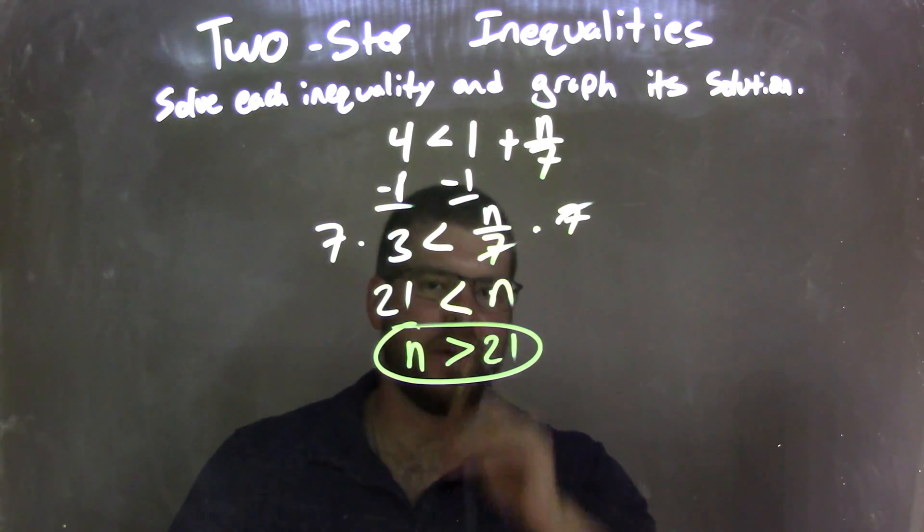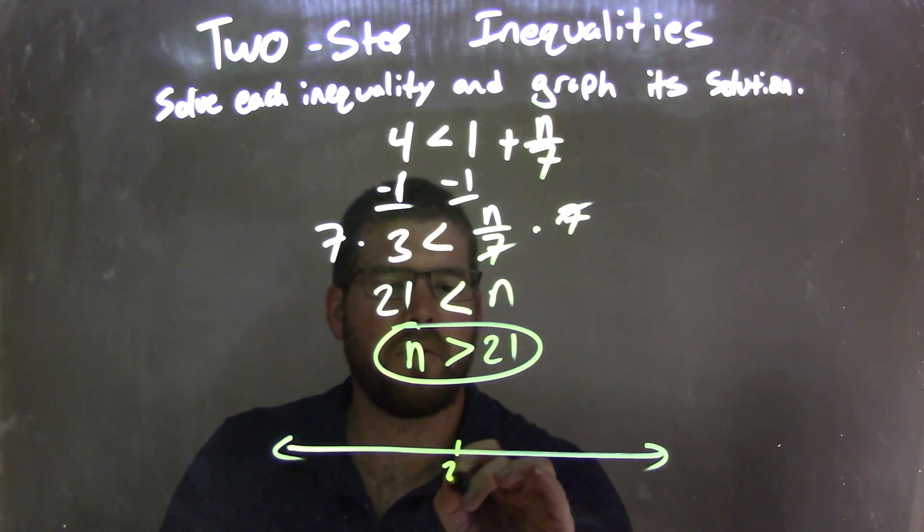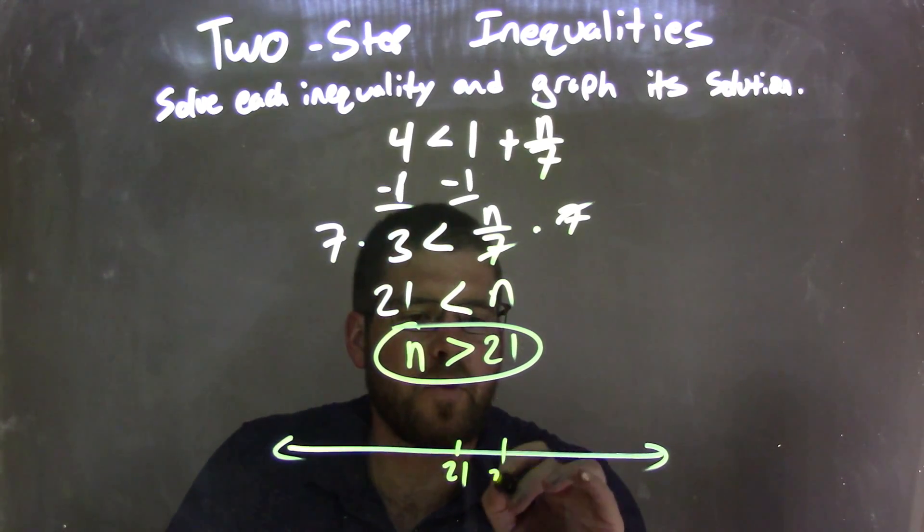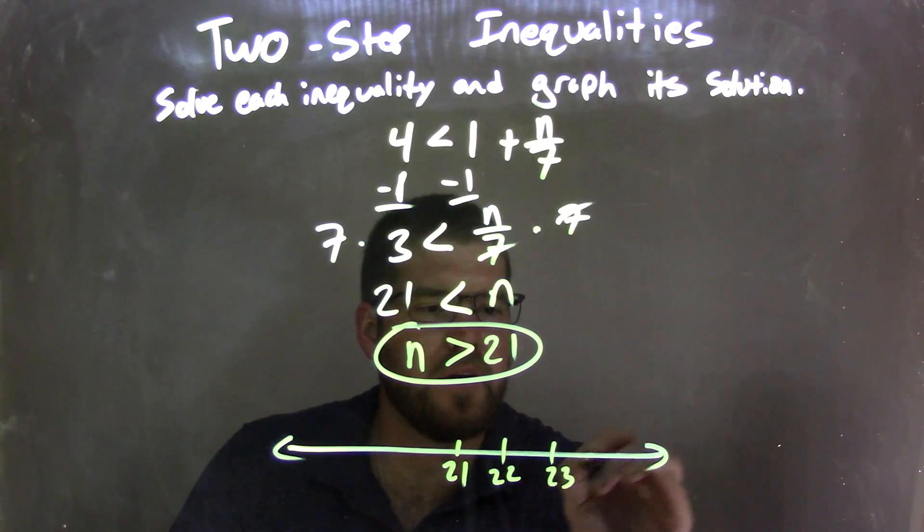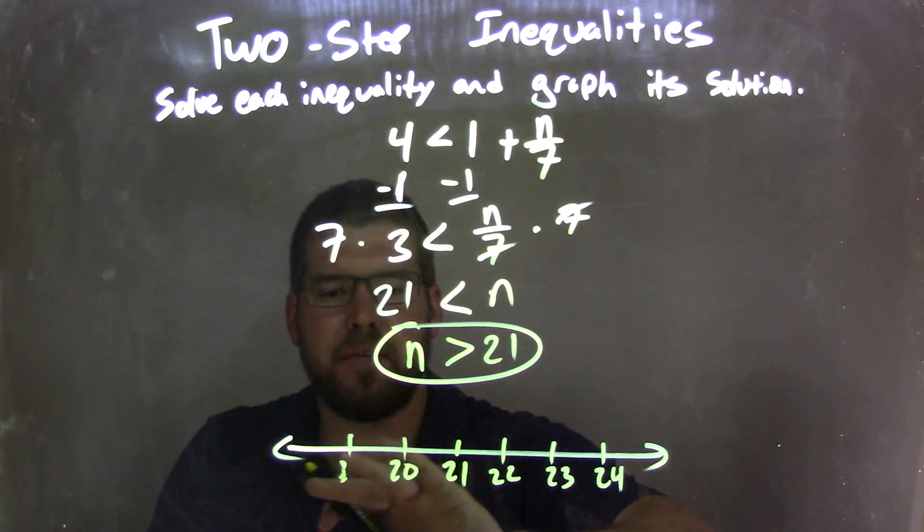So n is isolated, fantastic, and it's written first, so now we need to graph it. Make a graph here, put 21 on the number line, and let's go 22, 23, 24, and we have 20, 19 right there.